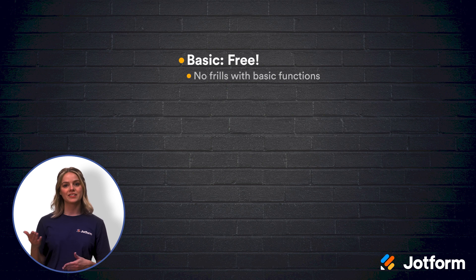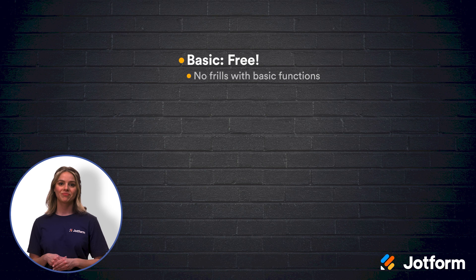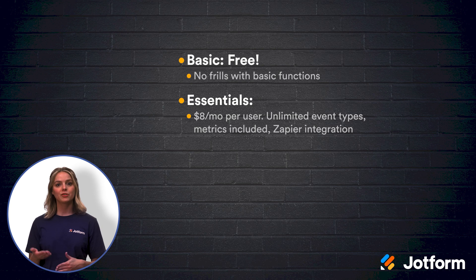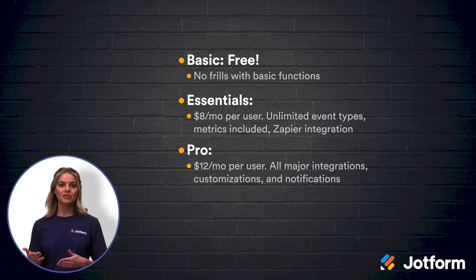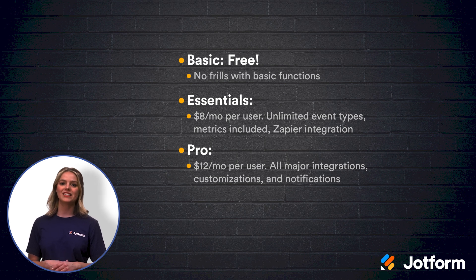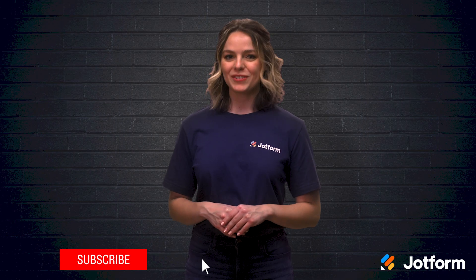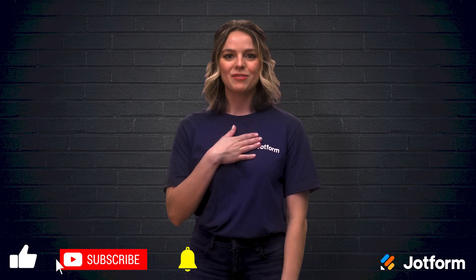Let's review. There's the Basic Plan, which is completely free and includes all of Calendly's base functions — zero frills for zero dollars. Then there's the Essentials Plan, which costs $8 per month per user and allows unlimited event types, provides metrics, and integrations with Zapier. Then we have the Pro Plan — $12 per month per user — and allows all major integrations, customizations, and SMS notifications. And if all else fails, you can also use JotForm as an alternative to Calendly. Thanks for tuning in. I'm Sissy with JotForm and I'll see you next time.